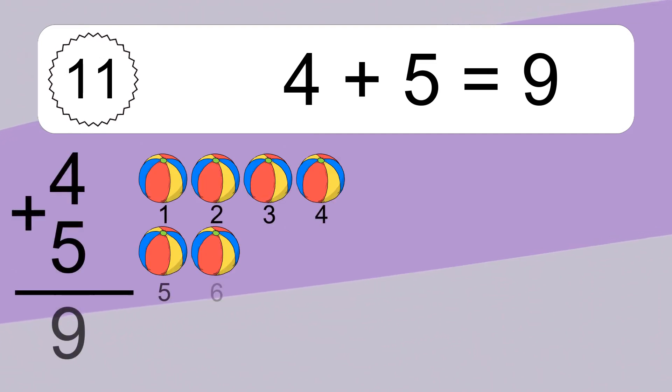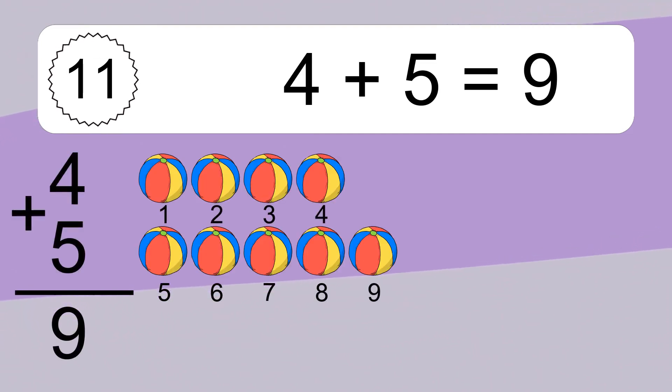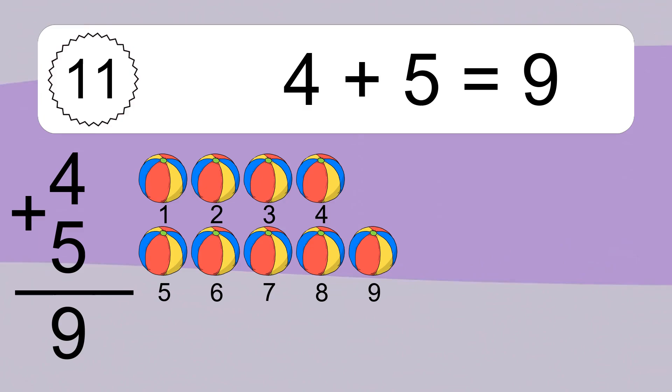4 plus 5 equals what? 4 plus 5 equals 9.